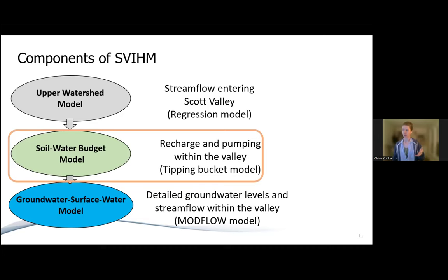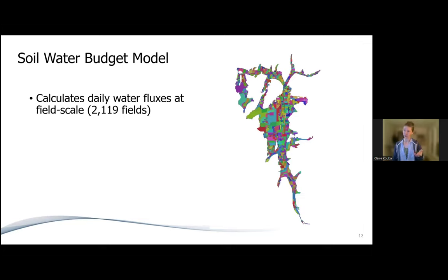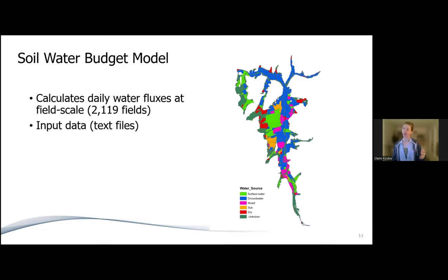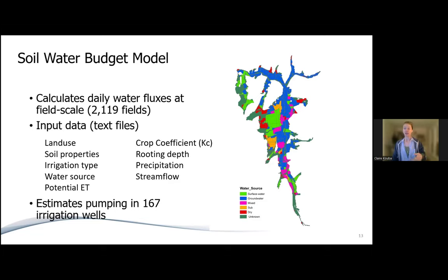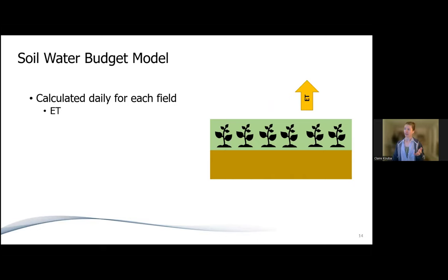The second piece is based on our soil water budget, used to calculate daily water fluxes at the scale of each field. The patchwork of polygons shown here is used to run these calculations — these don't map exactly onto parcels but are based more on fields from remote sensing. There's a lot of input data that goes into this budget calculation, including land use cover, properties of soil types, irrigation type on each field, water source, the irrigation coefficient of the crops planted on each parcel, as well as precipitation and stream flow information from the regression model. It also estimates irrigation from streams and from pumping wells at 67 irrigation wells in the model domain.